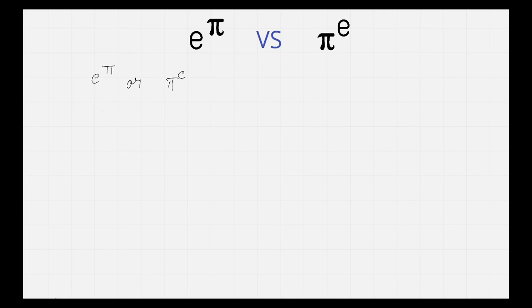So both e and π are irrational numbers. We cannot compare them directly. These two cannot be compared directly.